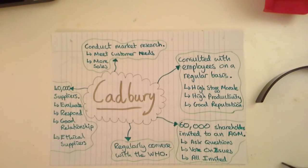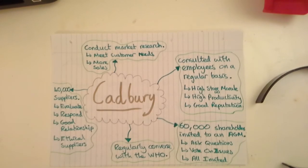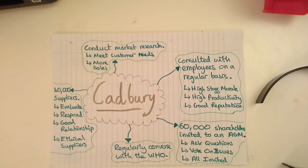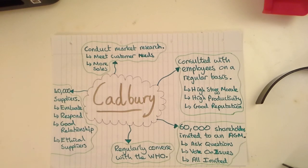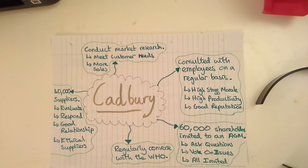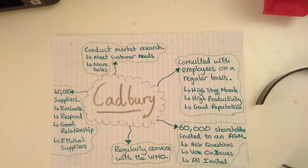Cadbury also has approximately 60,000 shareholders, and all of them are invited to an annual general meeting. At this meeting they can vote on various decisions the business is going to go ahead with, and they can also ask questions. This is beneficial because the owners — the actual shareholders — are better informed and know more about the market because they're able to ask about it, hopefully meaning that better decisions are going to be made about the direction the business is going and strategies it's going to adopt.